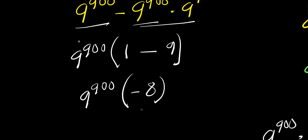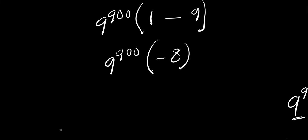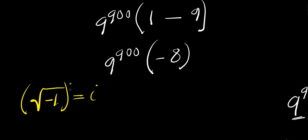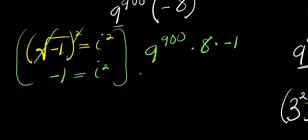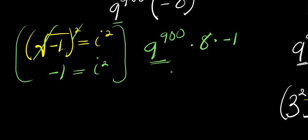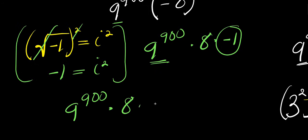This gives us 9^900 times negative 8. Now we make use of another identity: recall that the square root of negative 1 equals i. Squaring both sides eliminates the root, giving negative 1 equals i^2. So we have 9^900 times 8 times negative 1, and we replace negative 1 with i^2 to get 9^900 times 8 times i^2.